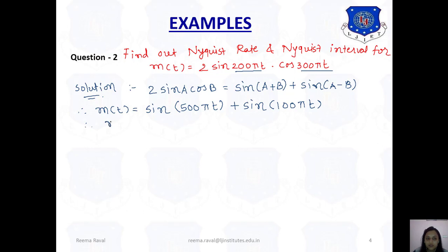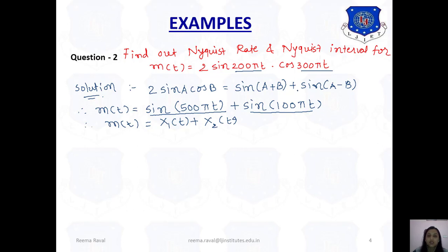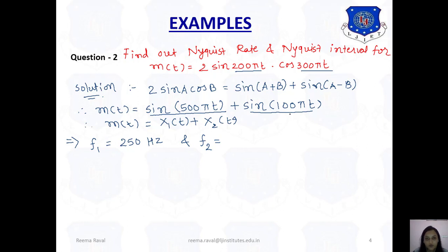Now we compare this with the standard equation form m(t) = x1(t) + x2(t), and apply the same method as the previous example to find F1 and F2. For the signal with 500πt, frequency = 500/2 = 250 Hz. For the signal with 100πt, frequency = 100/2 = 50 Hz.